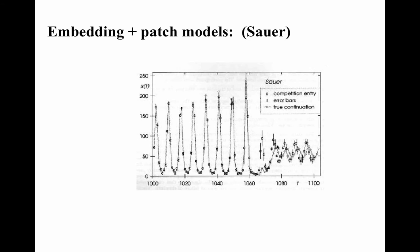Here's an entry featured in the introduction to their book as one of the best — again from Tim Sauer, the same person who did the inter-spike interval embedding. What you're seeing here is the true continuation, where the series should have gone, which they know because they held back the last chunk. C is where Tim Sauer's method predicted it would go. This was a strategy like the one I just described: he embedded the data and then did local patch models, somewhat more sophisticated than the roulette approach.